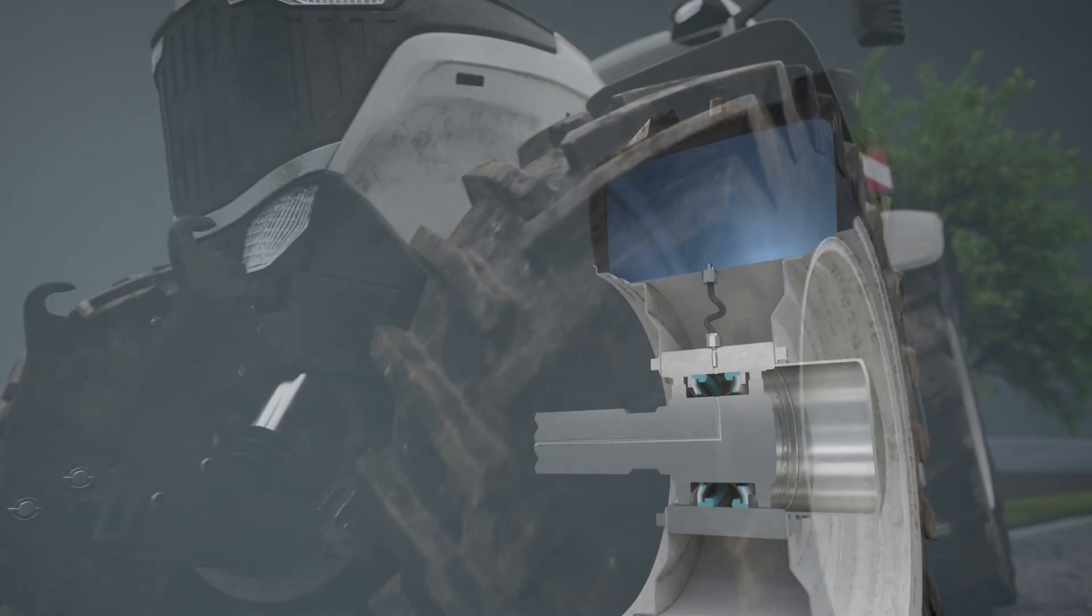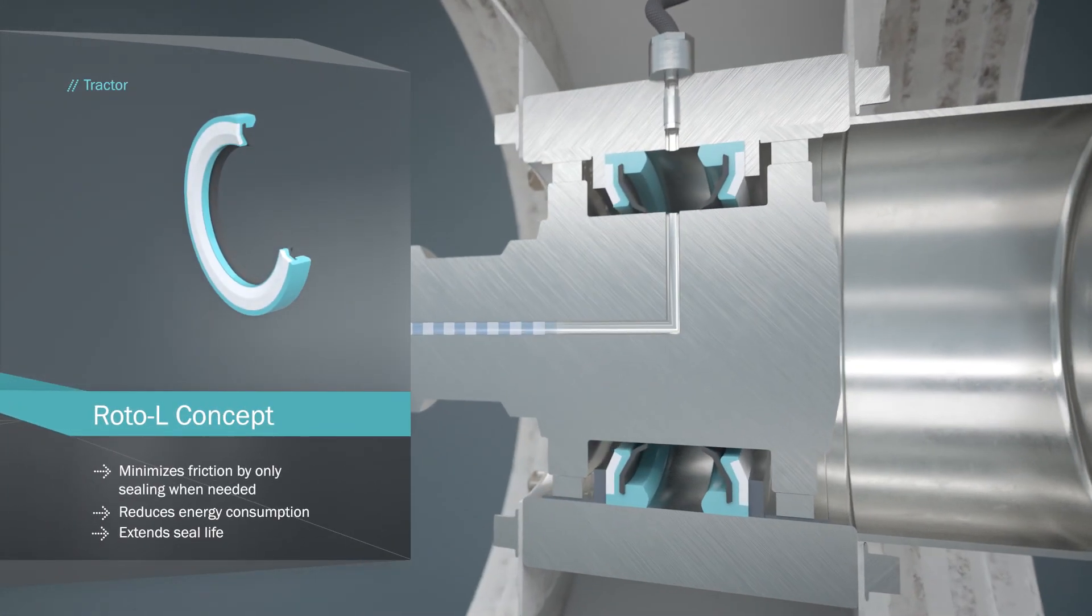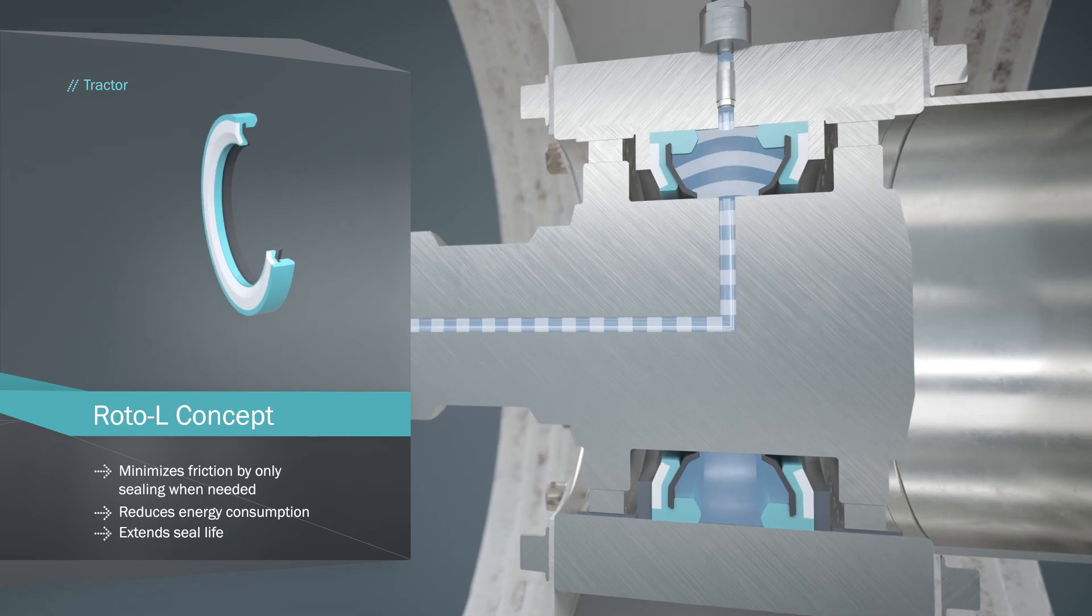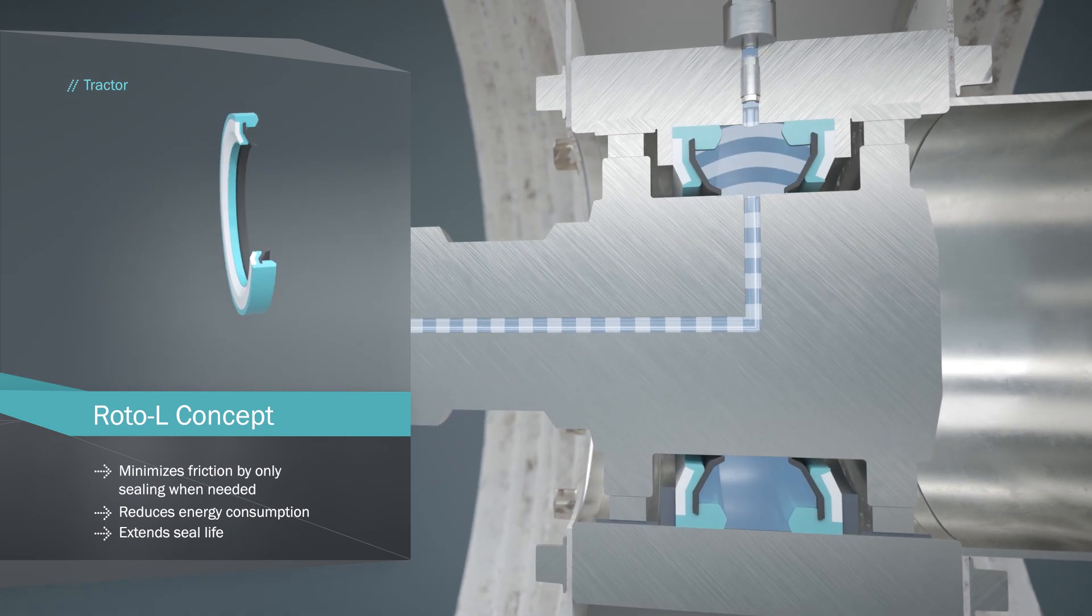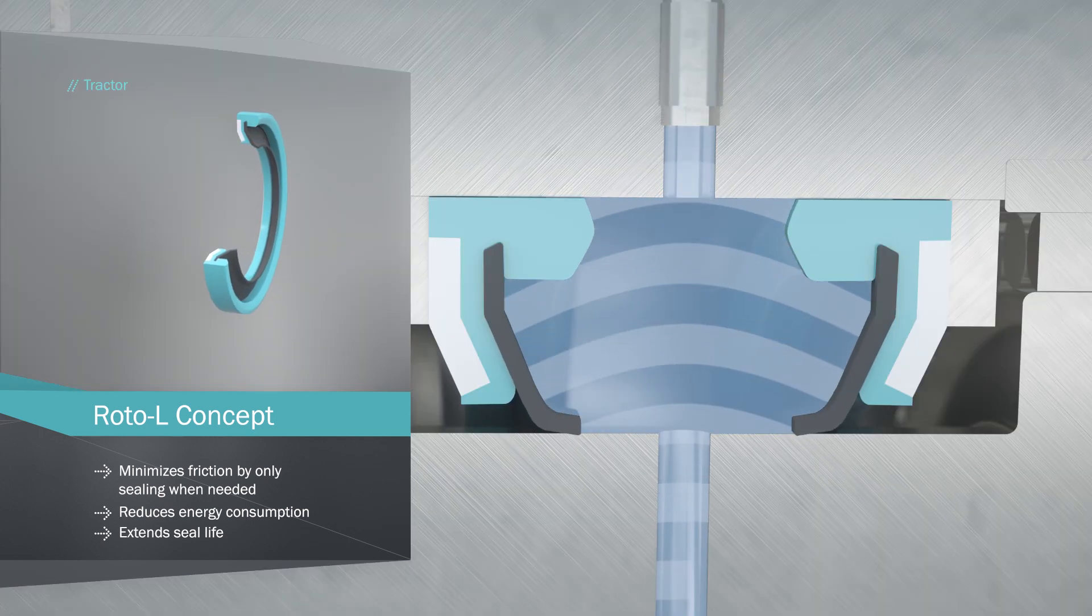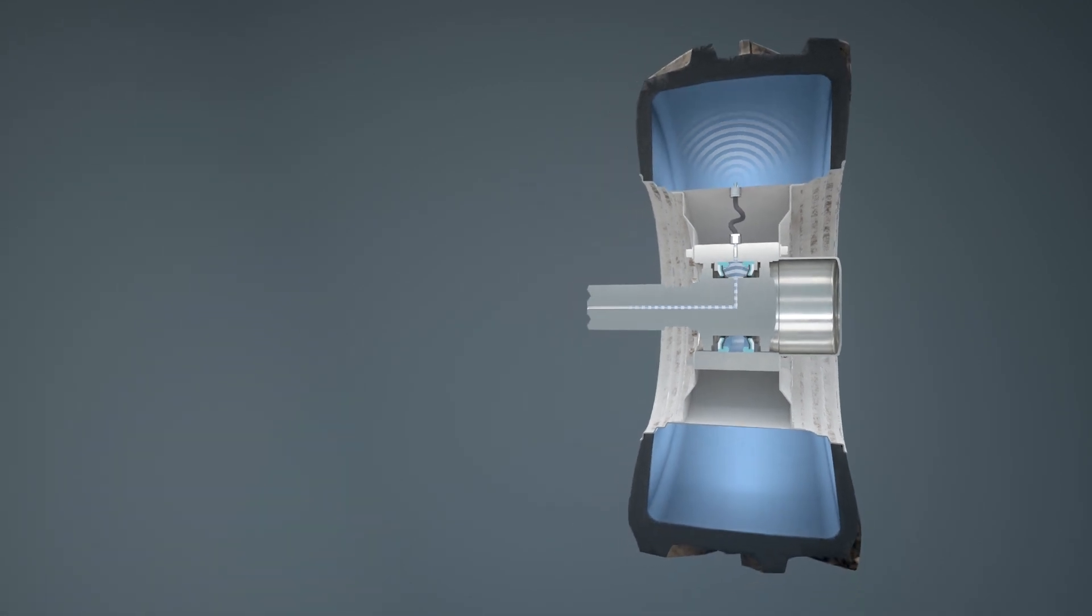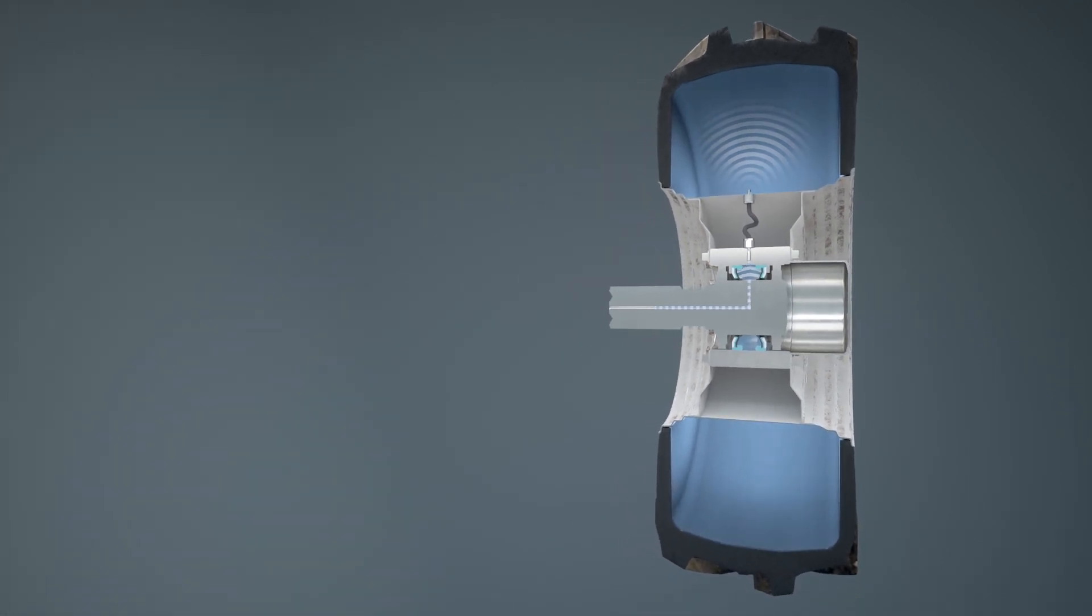The latest off-highway vehicles feature central tire inflation systems to modify traction. As the tire pressure adapts to the conditions under the wheels, Turcon ROTO-L activates only when required, meaning nearly no friction without pressure, reducing energy consumption and dramatically increasing seal life.